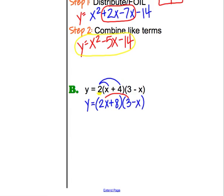So first we have 2x times 3, which is 6x. Notice we don't have our x squared term first. And then 2x times negative x is minus 2x squared. We'll have to reorganize when we go to standard form.